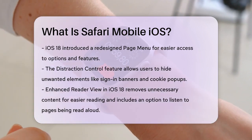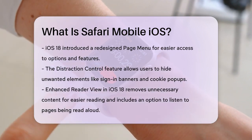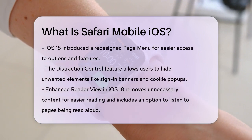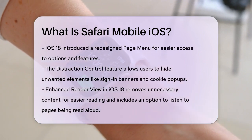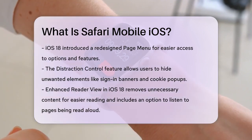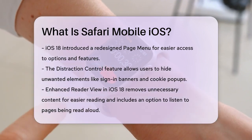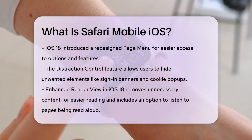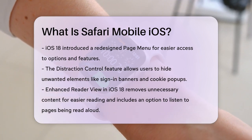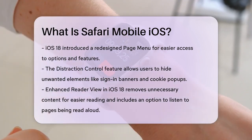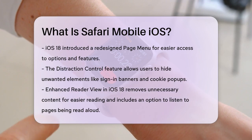For example, you can now hide distracting items, like sign-in banners and cookie preference pop-ups, using the Distraction Control feature. Simply tap the page menu, choose Hide Distracting Items, and select the elements you want to hide.